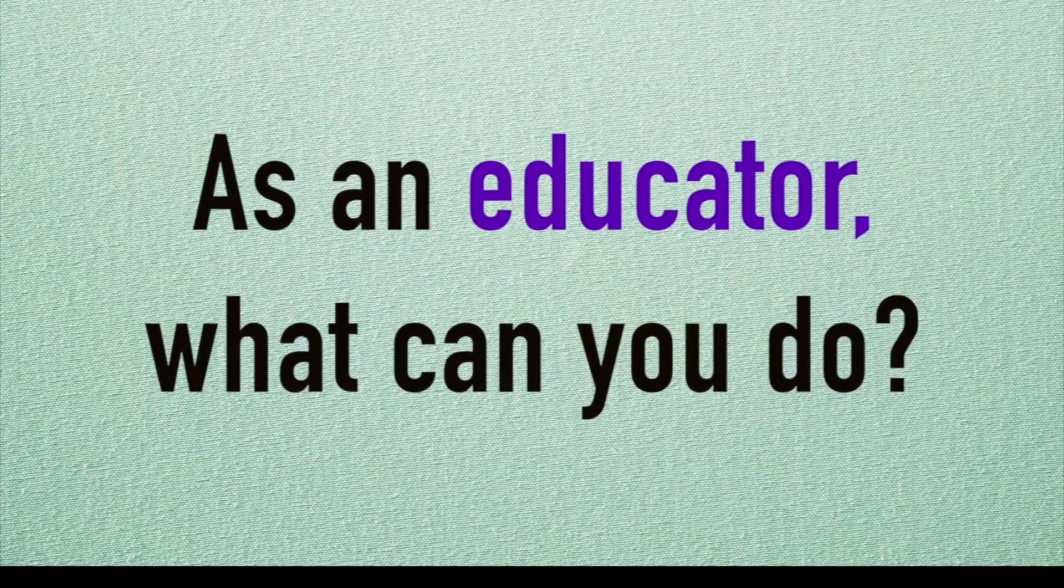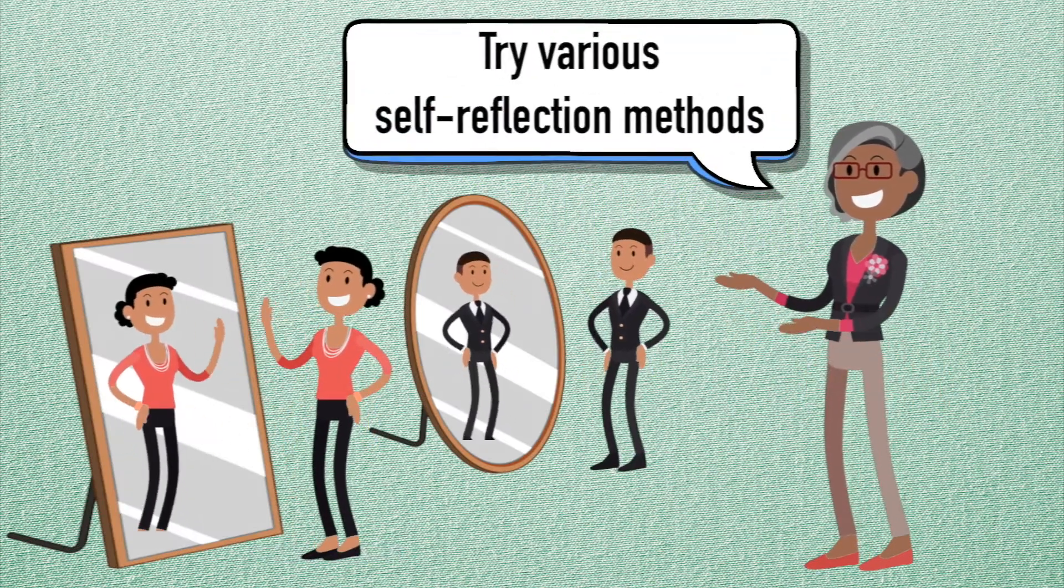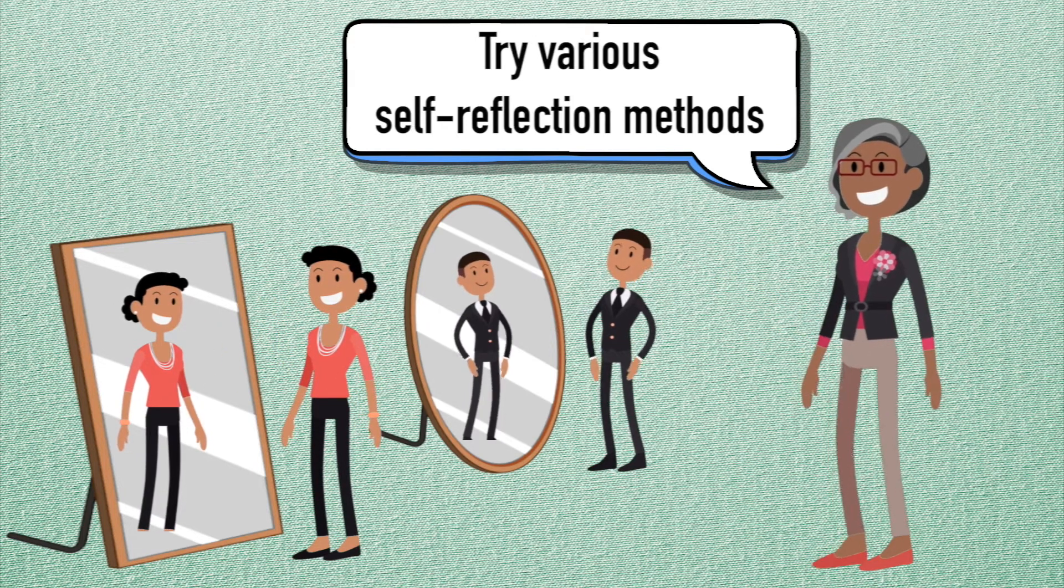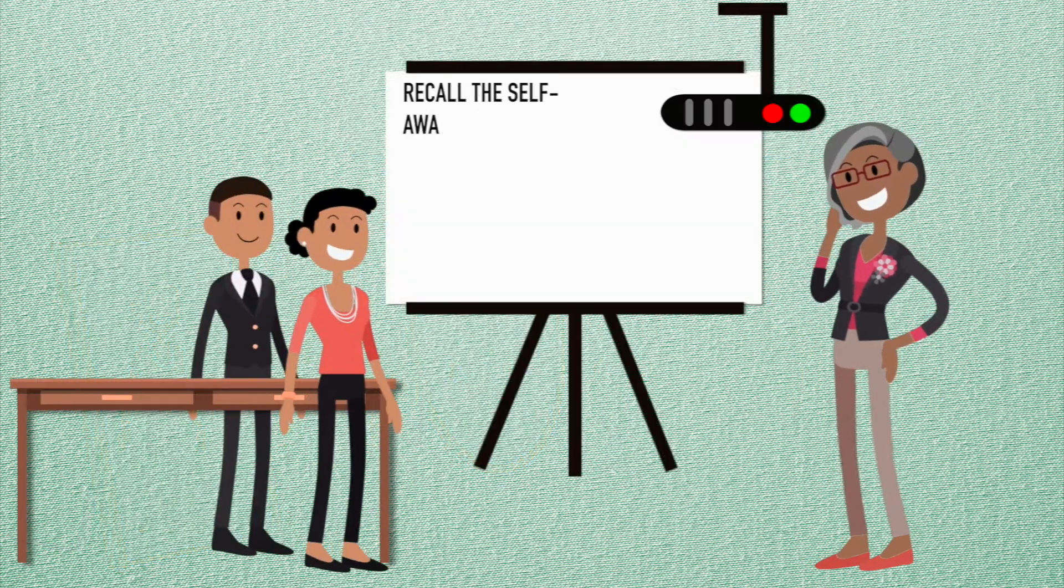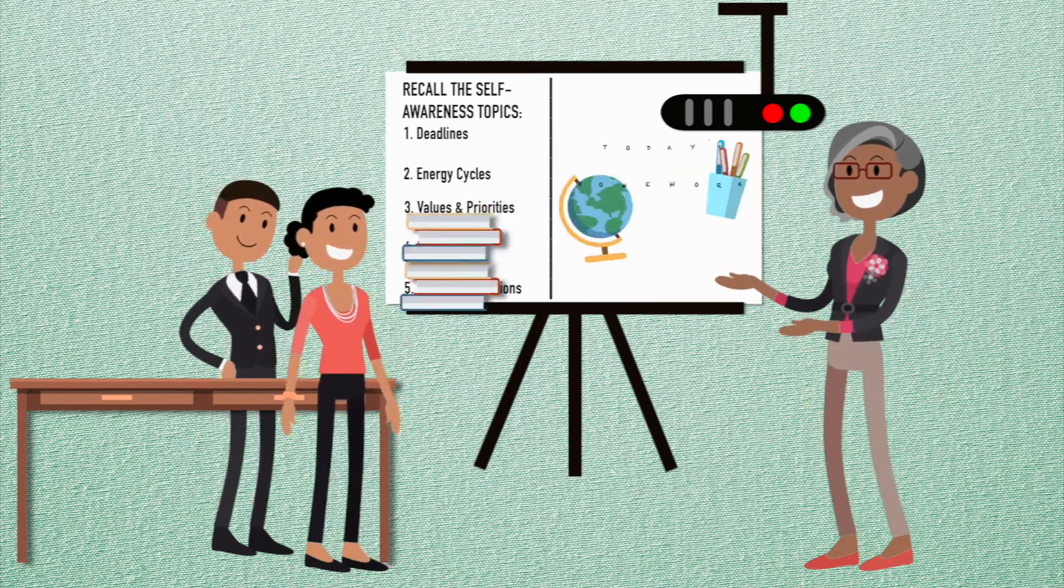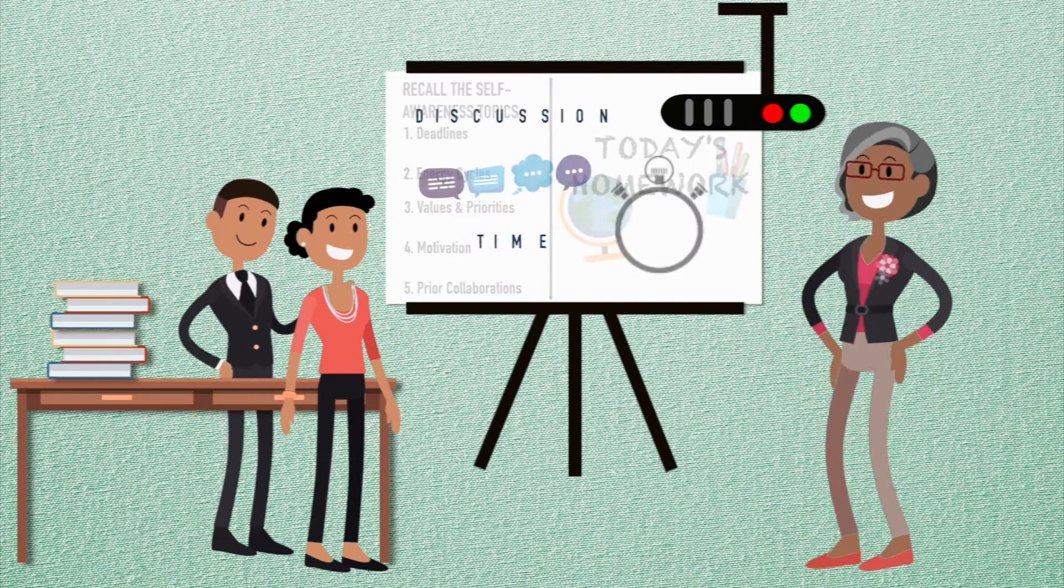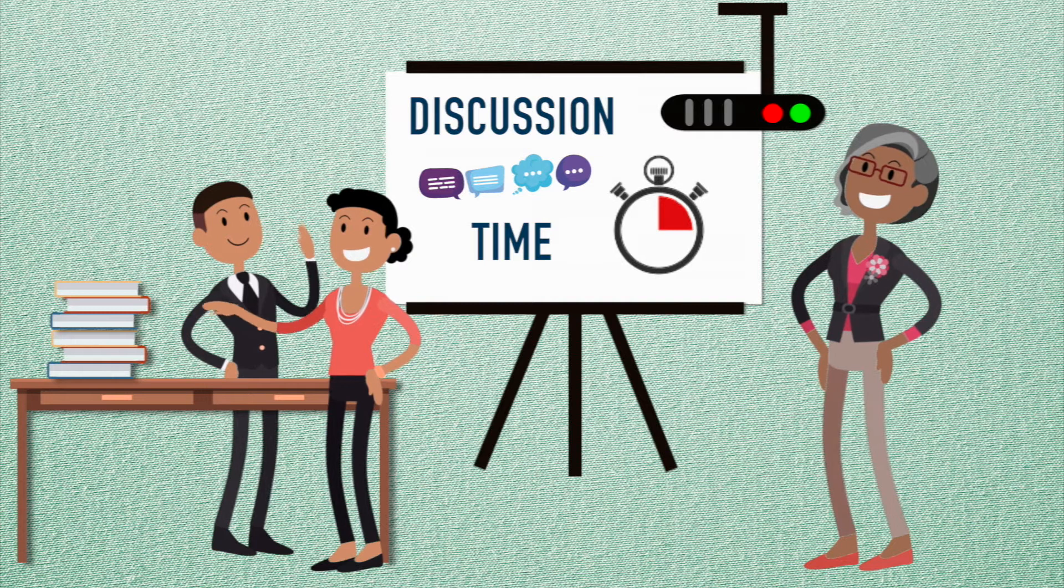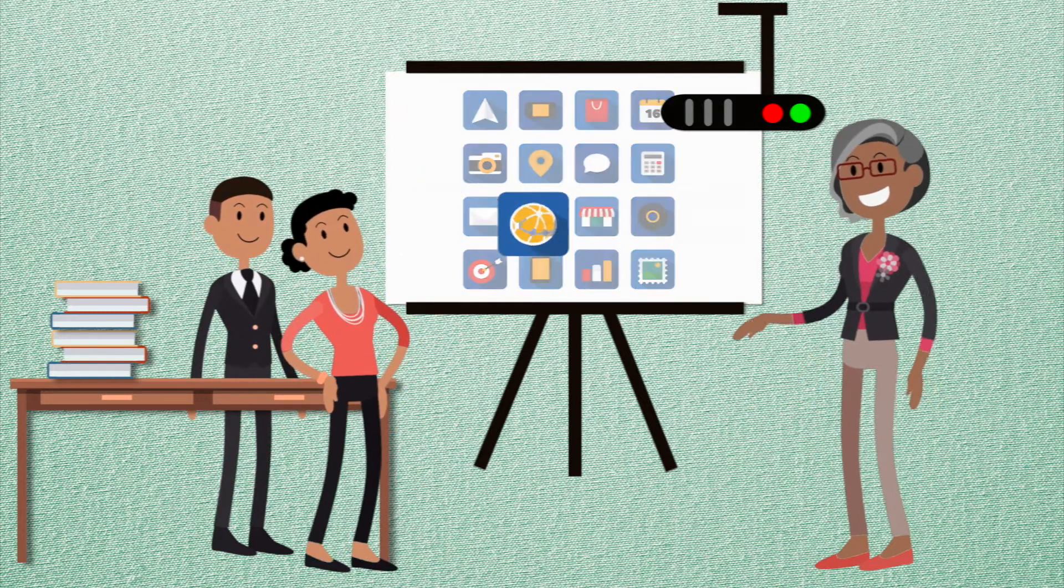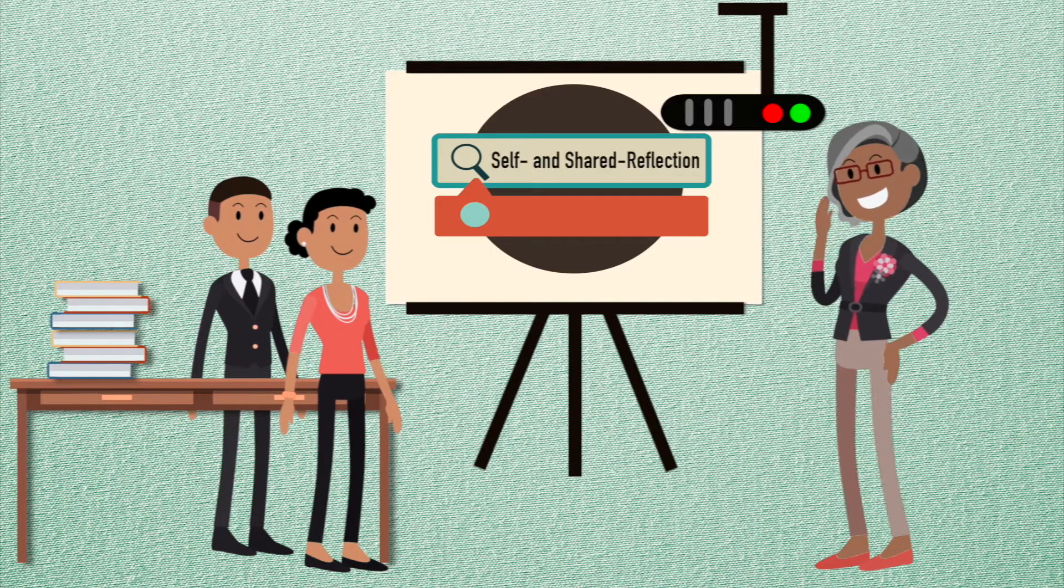As an educator, what can you do? Guiding students towards relevant individual self-reflection can be done in various ways and doesn't need to take a great deal of time. Using the five key self-awareness topics above, students can be given questions encouraging relevant self-reflection as homework tasks. Initial team formation can include discussion time explicitly dedicated to these topics, or specific tools all easily accessible online can be used to prompt self and shared reflection.